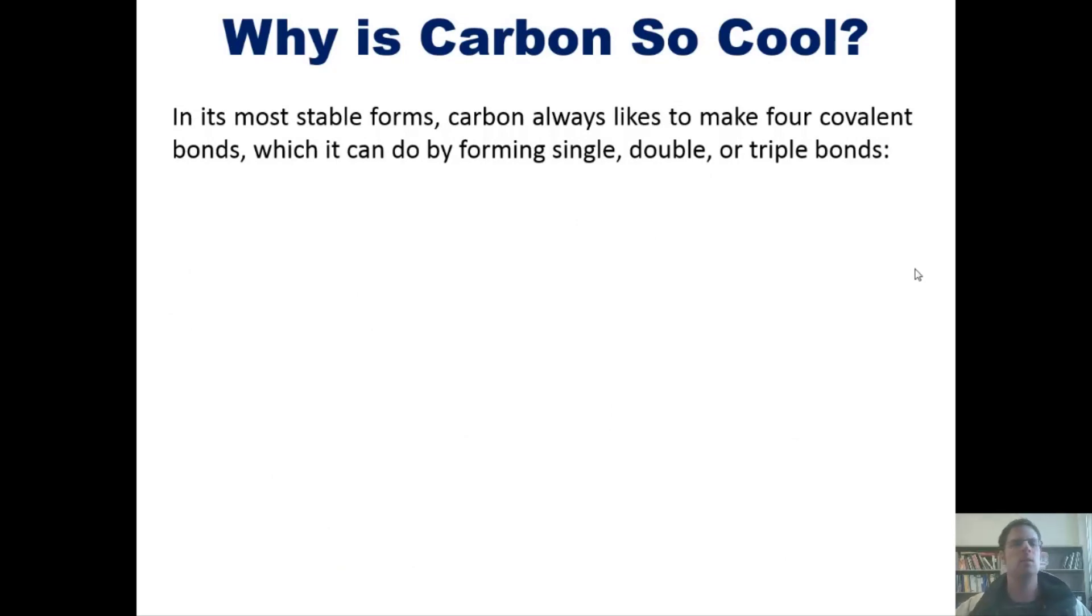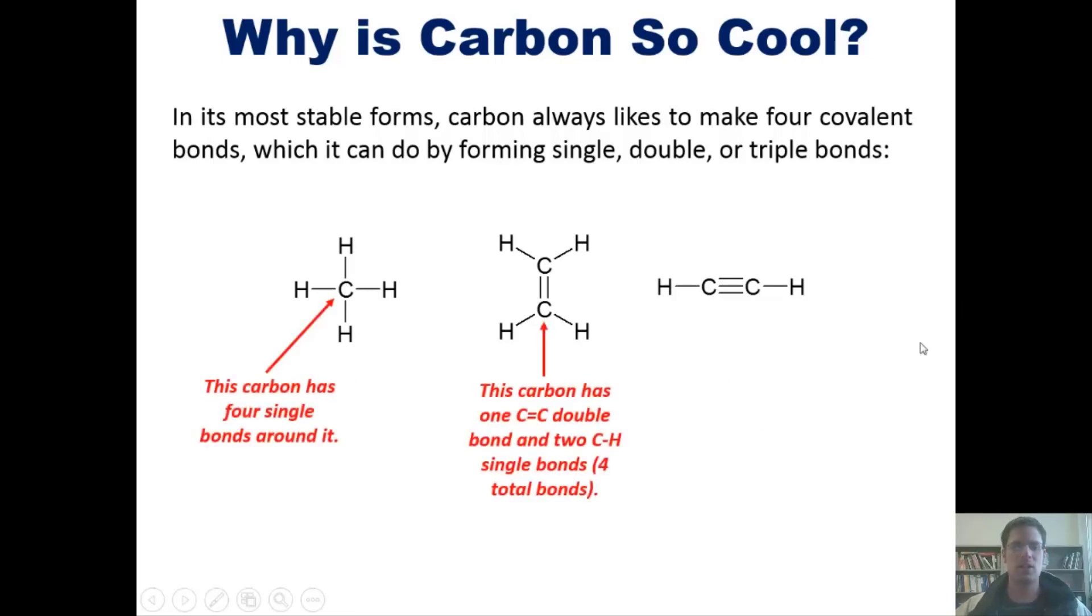So why is carbon so cool then? Well, in its most stable form, carbon always likes to make four covalent bonds, which it can do by forming single, double, or triple bonds, as we show here. This carbon, of course, has four single bonds around it. This carbon has one carbon-carbon double bond and two carbon-hydrogen single bonds around it. And these carbons have one carbon triple and one carbon-hydrogen single bond. Hopefully you're cool with that. So in effect, carbon is so cool because it's much more versatile than a lot of other elements because it can make all of these different kinds of bonds and, as a result, plays a central role in forming a variety of very structurally complex molecules, especially molecules that are found commonly in living systems, including us.